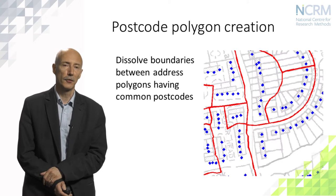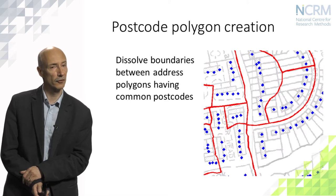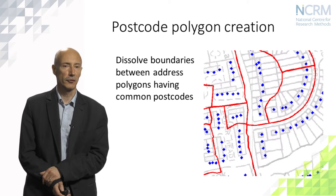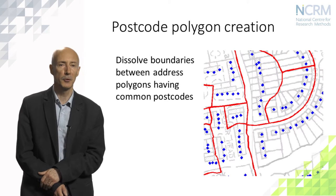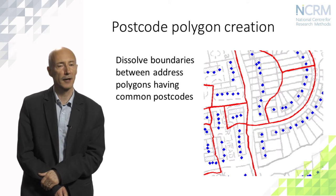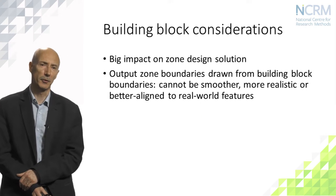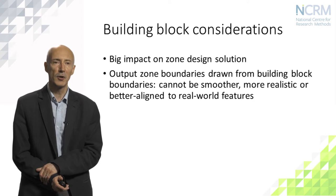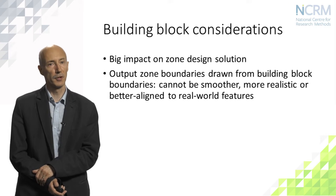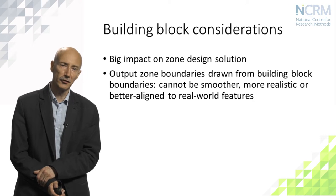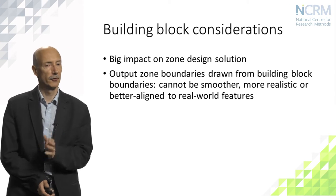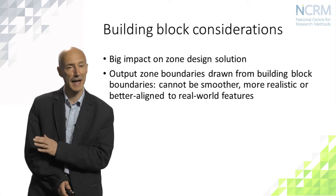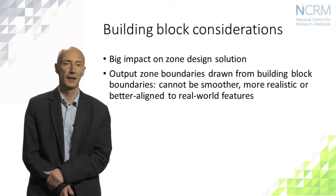Note that the boundaries don't precisely follow the background mapping features because that information wasn't supplied. If we wanted boundaries to follow every stream or parcel of land, that information would need to be used in designing the building blocks. Importantly, all output zone boundaries are drawn from the building block boundaries, so outputs can't be smoother, more realistic, or better aligned to real-world features than the building blocks themselves. If street geography must be reflected in the output, it must be reflected in the construction of the building blocks.